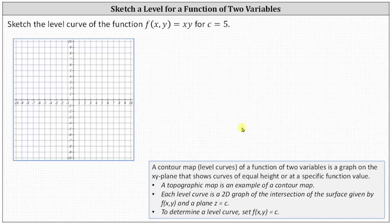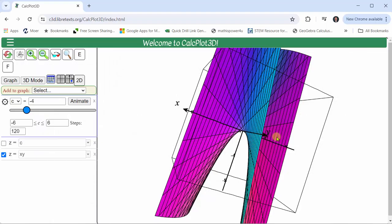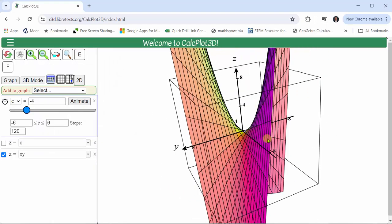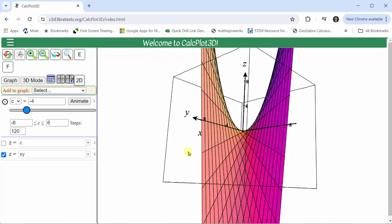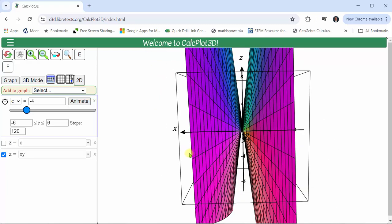Before we do this, let's look at this graphically. Here we see the graph of the surface given by f of x comma y equals xy. And now let's graph a plane z equals c where c is any constant.